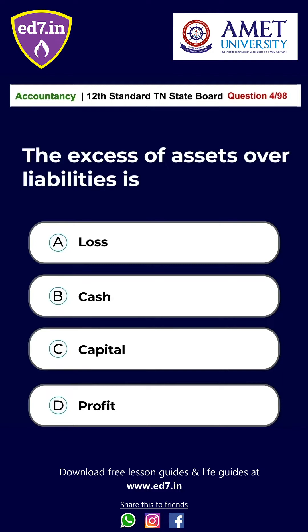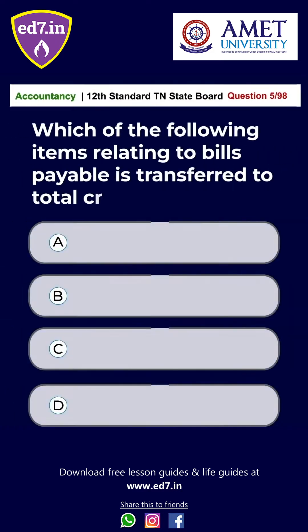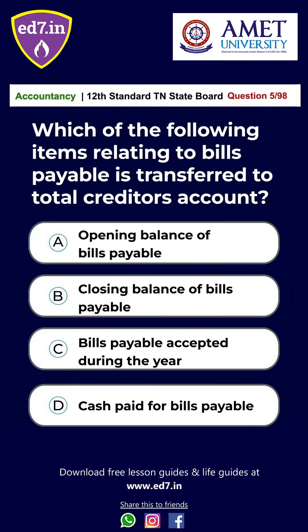Question 4: The excess of assets over liabilities is — option A: loss, option B: cash, option C: capital, option D: profit. The answer is option C: capital.